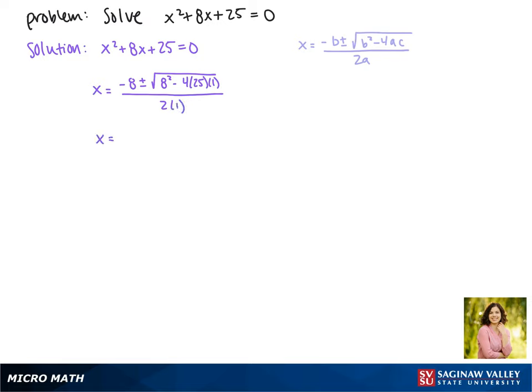This gives us negative 8 plus or minus the square root of 64 minus 100, all divided by 2. Now 64 minus 100 is negative 36.